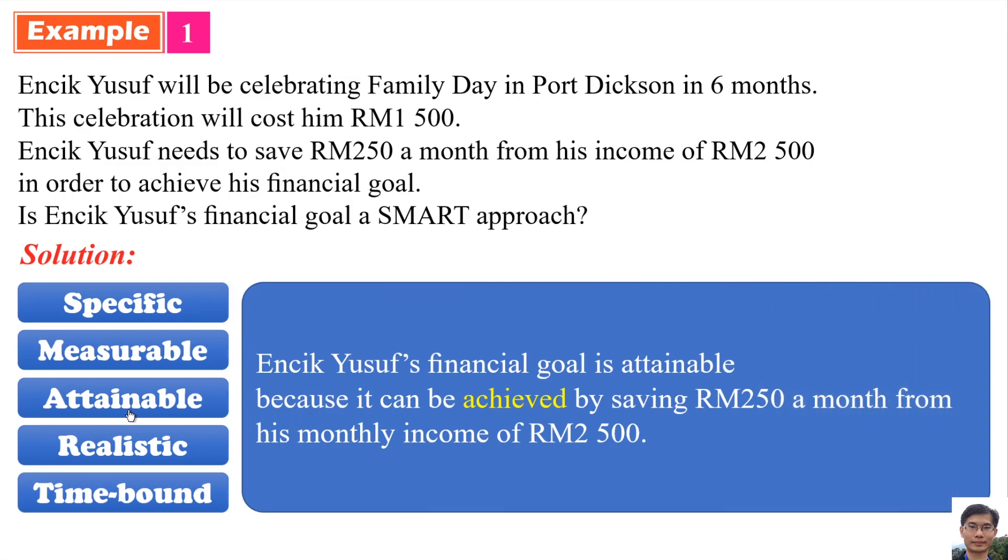The goal is attainable. Encik Yusuf's financial goal is attainable because it can be achieved by saving RM250 a month from his monthly income of RM2,500.